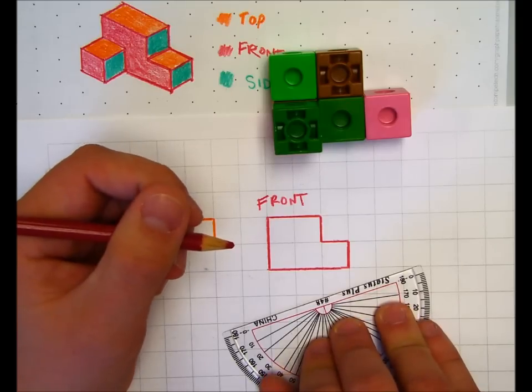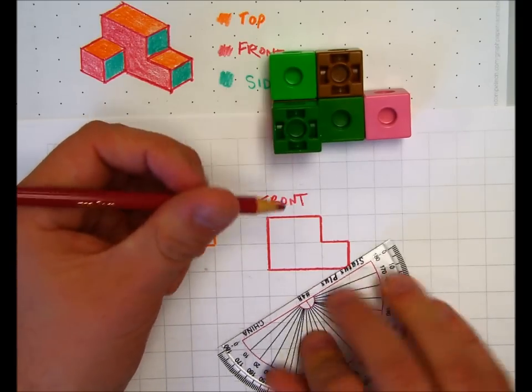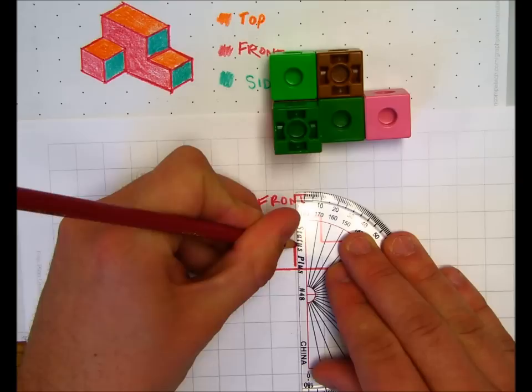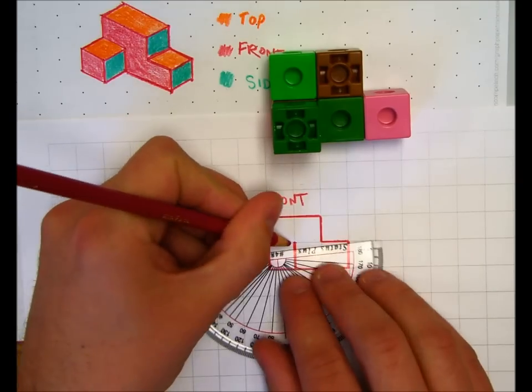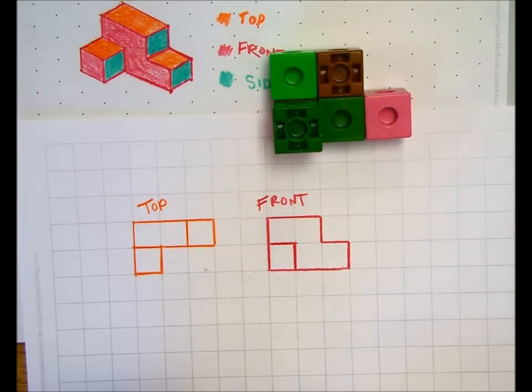And then you can probably guess what we need to do now. We need to indicate that this block is higher than the surrounding ones. So again, to show the altitude change or the height change, we just make sure that those lines are marked. And that's the front view.